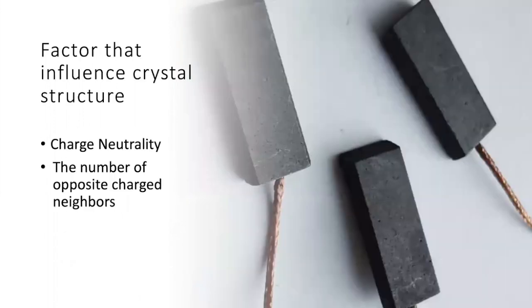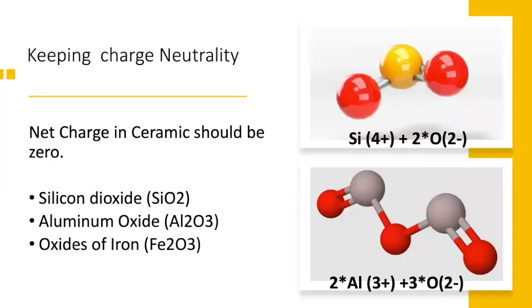There are two factors that contribute to their structure: charge neutrality and the number of opposite neighbors that they have. In the first characteristic, the net charge in a ceramic should be zero, which indicates the molecules and atoms will move in such a way that the overall charge of the molecule will be zero.